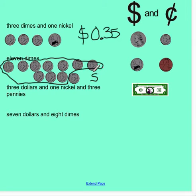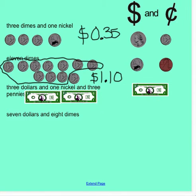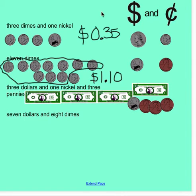Next example: three dollars and one nickel and three pennies. One dollar, two dollars, three dollars, one nickel, and three pennies — one, two, and three. This time I can see I have three dollars and five cents plus three more: six, seven, and eight cents.